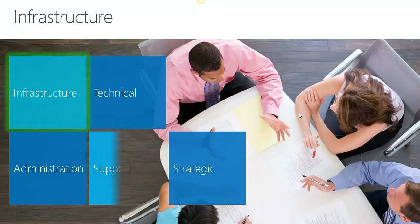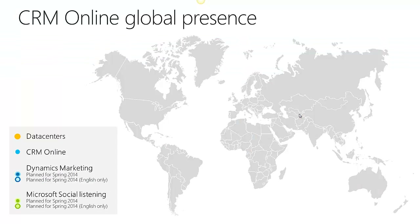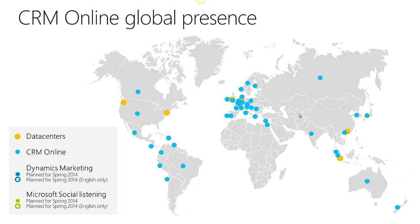Let's talk about the infrastructure. Microsoft Dynamics CRM Online is hosted globally in six data centers. Along with those six data centers, we have multiple cache locations to ensure that our customers have access to the data in the fastest manner.